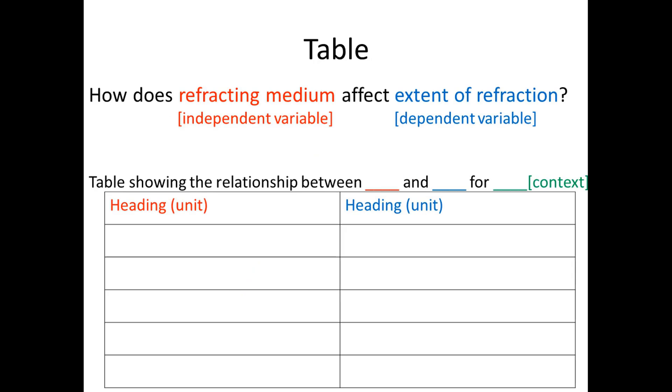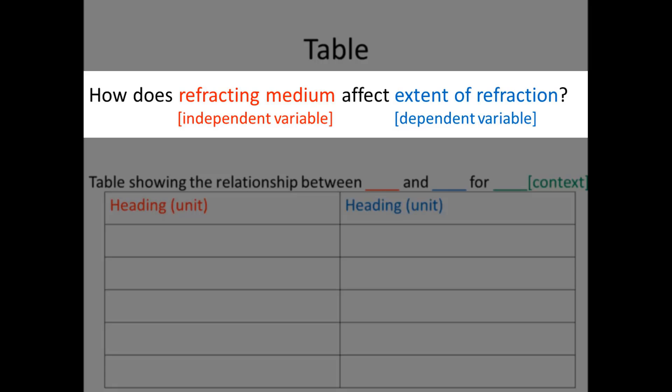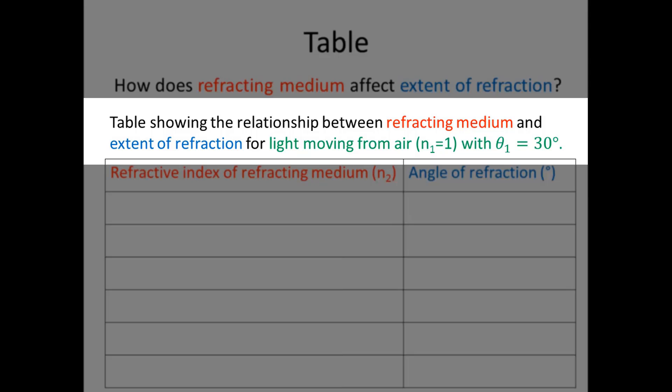Now we need a table for our data. The independent variable is refracting medium and the dependent variable is extent of refraction. The incident medium is air with a refractive index of 1, so n1 = 1 and our angle of incidence theta 1 is 30 degrees.